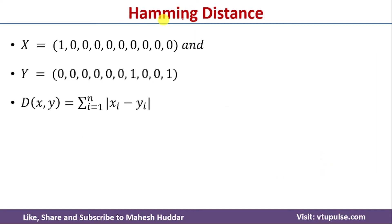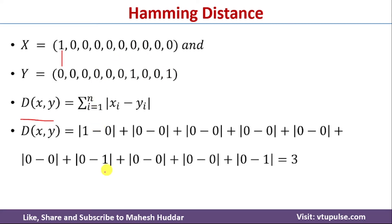Coming to the last distance measure, the Hamming distance. It is calculated using the formula: d = summation from i = 1 to n of the cardinality of (xi minus yi), where n is the number of elements in each object — which is 10 here. So i goes from 1 to 10. For example, the first combination gives cardinality of (1 minus 0), plus (0 minus 0), plus (0 minus 0), and so on. Once you write this for all combinations and solve the equation, we get the value 3.